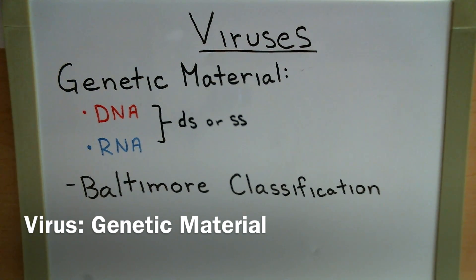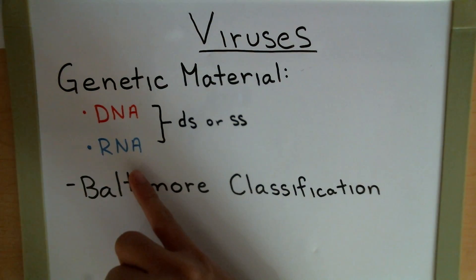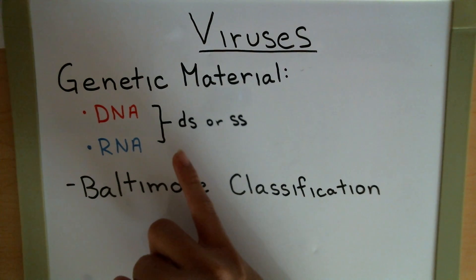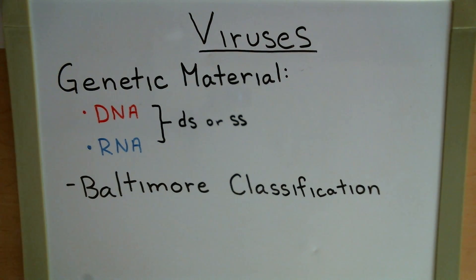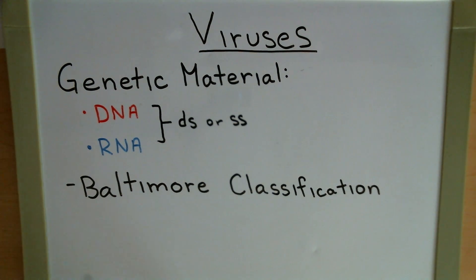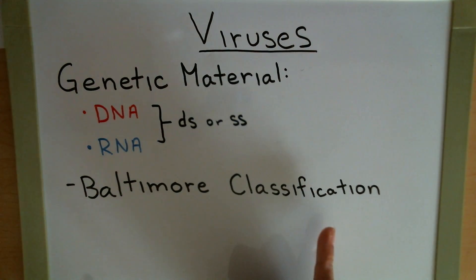The genetic material for viruses can either be DNA or RNA, and that can either be double-stranded or single-stranded. You'll never have a single strand of DNA mixed with a single strand of RNA — it'll always be DNA only or RNA only, never a combination of both as the one genetic material. This is very important in classifying viruses, as we will see in the Baltimore classification.